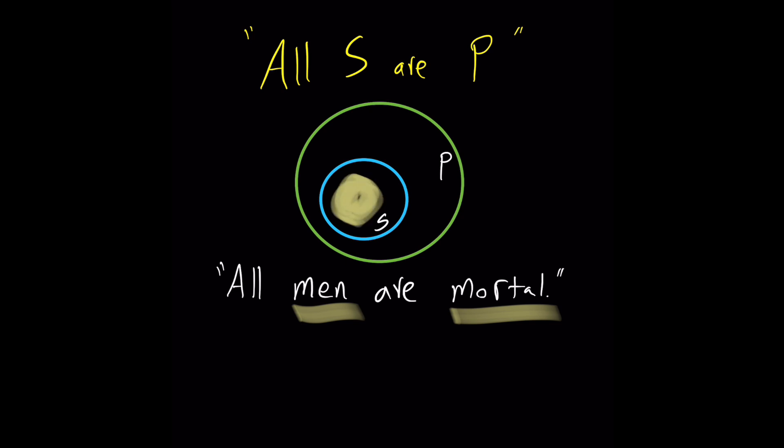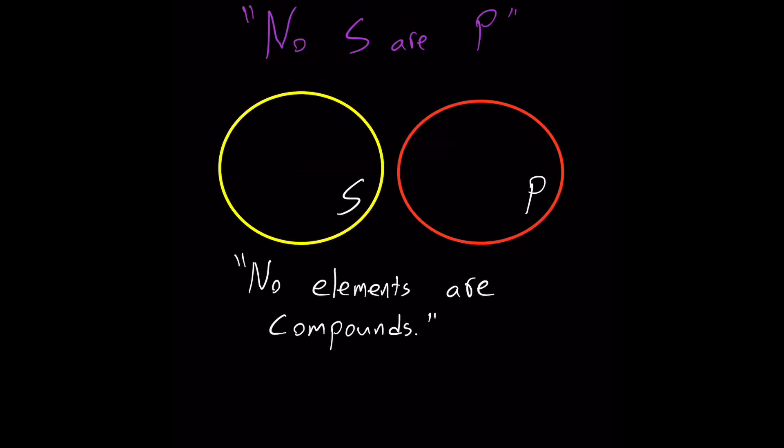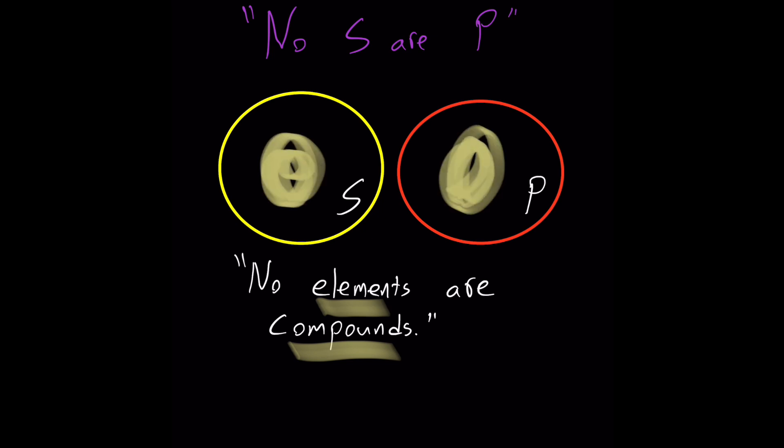Now consider the universal negative proposition, no S are P. For example, no elements are compounds. The subject is elements, the predicate is compounds. There's mutual exclusivity. Each member of S does not belong to P, so the circles are entirely apart. We know their full distribution.